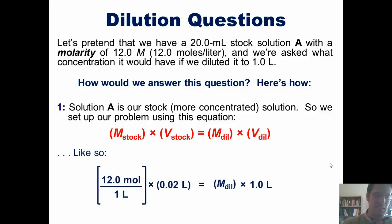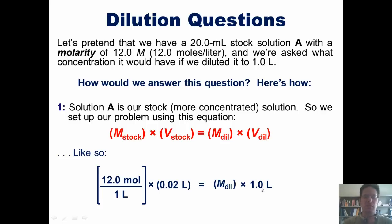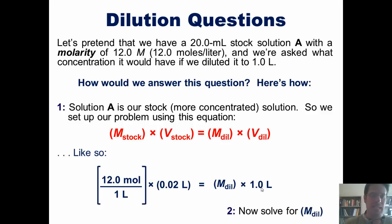We set this up keeping in mind that the concentration of our stock solution is 12 moles per liter, and the volume of our stock solution is 20 milliliters, or 0.02 liters. We've been asked to determine the concentration of the diluted solution if we diluted it to 1 liter. This is slightly different from our previous problems, but once we set it up correctly, it's just simple algebra. So now we solve for M-diluted, which I'll let you do on your own.